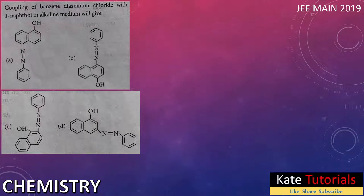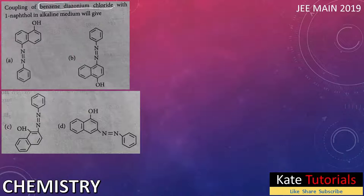Welcome to this video. The question is: coupling of benzene diazonium chloride with 1-naphthol in alkaline medium. This question was asked in JEE Main 2019. Unless we know the structures of benzene diazonium chloride (BDC) and 1-naphthol, we can't do the reaction.